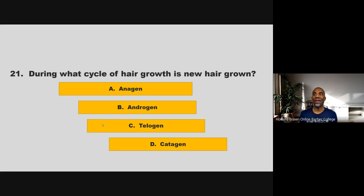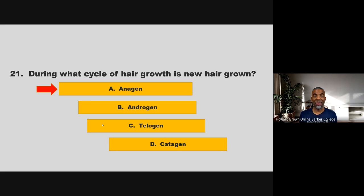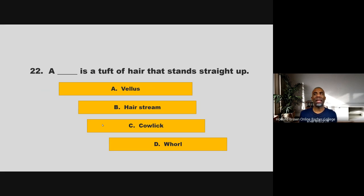During what cycle of hair growth is new hair grown? Is it anagen, androgen, telogen, or catagen? If you chose A, anagen, you are correct.